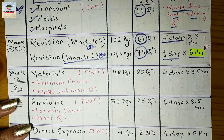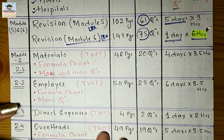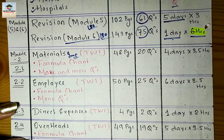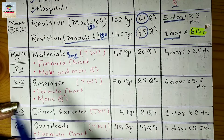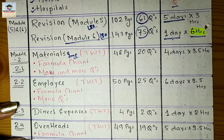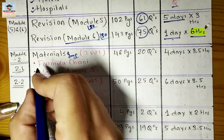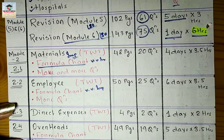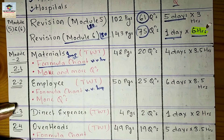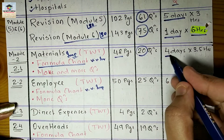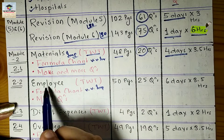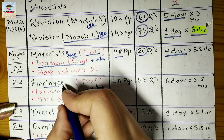We are now done with 60 marks. After this unit, we start Module 2 — Materials — which is very important because every year you get a question either from Materials or from Employee cost. Making a formula chart for Materials, Employee, and Overheads is very, very important as there are so many formulas you could get confused. Materials has 48 pages and only 20 questions, and will take four days. All classes are on my YouTube channel.